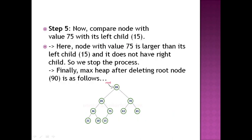We compare node 75 with its left child and swap as needed. Finally, every node is set in the correct position — all comparisons are satisfied and no further swaps are needed. No more operations are required, and the root node deletion is complete.